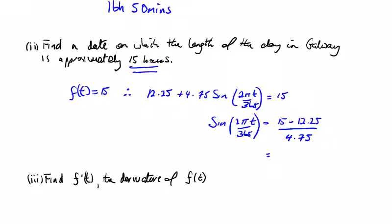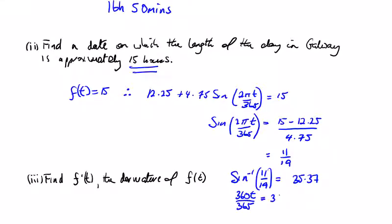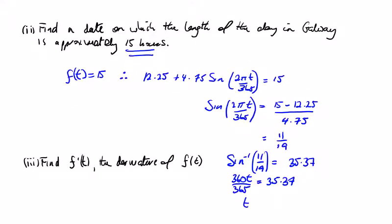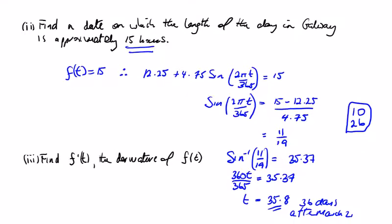The calculator gives 11/19, so the inverse sine of 11/19 gives us the angle in degree form: 35.37°. So 360t/365 = 35.37, meaning t = 35.37 × 365/360 ≈ 35.8, so we're looking for 36 days after March 21st. That's 10 days remaining in March plus 26 days in April, giving us April 26th.